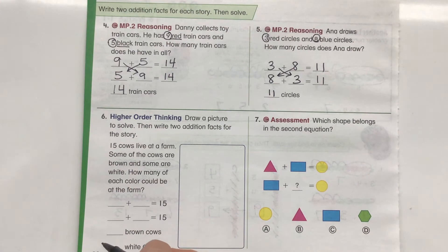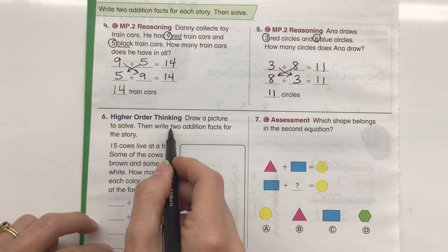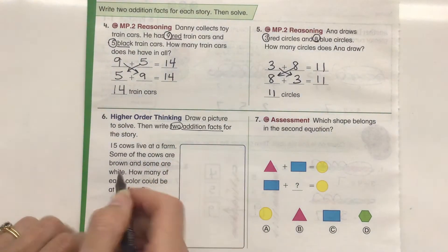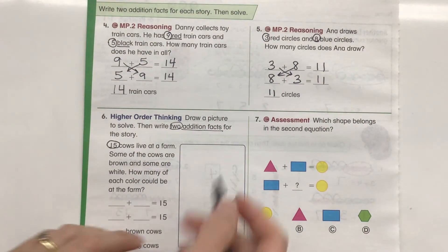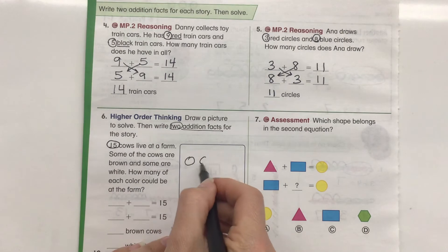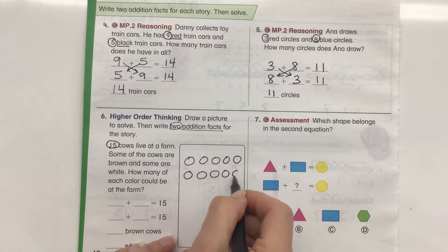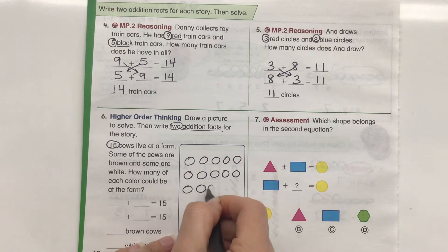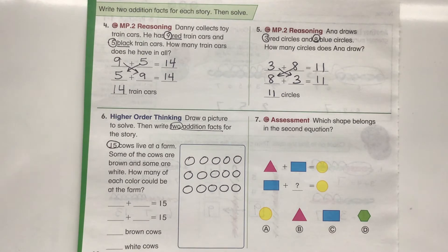Alright, let's take a look at our higher order thinking. This really gets us thinking. Draw a picture to solve. Then write 2 addition facts for the story. 15 cows live on a farm. I'm going to draw 15: 1, 2, 3, 4, 5, 6, 7, 8, 9, 10, 11, 12, 13, 14, 15. And again, you can pause the video and draw your circles and then turn it back on when you're ready to go.